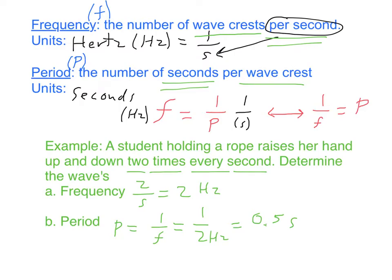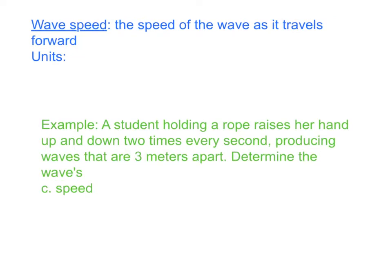Let's take a look at another example, a continuation of this. Wave speed: we can define this as the speed of the wave as it travels forward. The units, as we're talking about speed, would be meters per second.